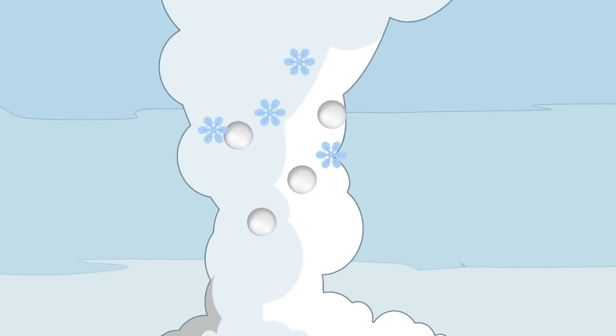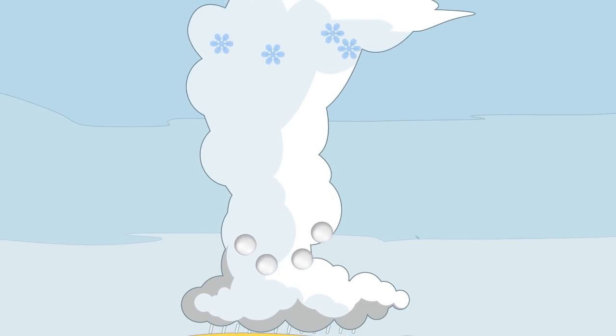The updraft carries the lighter droplets and crystals whereas the heavier graupel tends to fall and so collisions occur. These collisions lead to the graupel gaining a static negative charge whereas the ice crystals become positively charged. And because they're moving away from one another, a separation of charges occurs where the top of the cloud is positively charged and the bottom of the cloud is negatively charged.